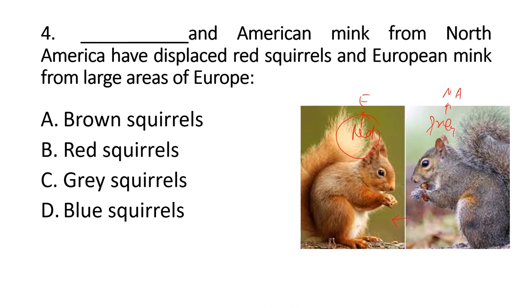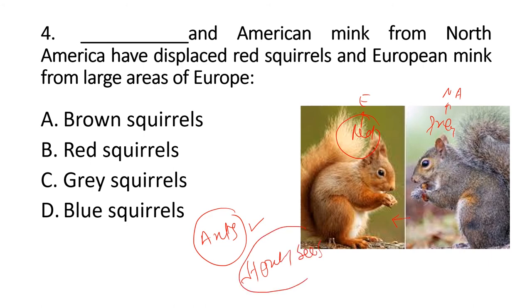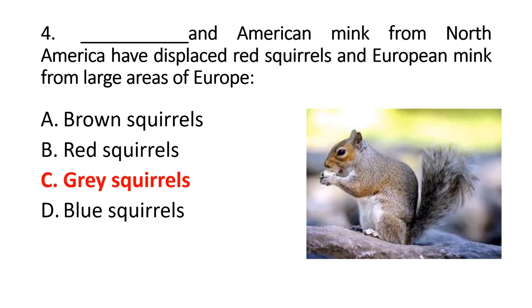We can see more examples — ants are being moved from one area to another and are considered exotic species. We can also use honeybees as an example. Honeybees are moved from one area to another and act as pollinators, but the problem is that their morphology and behavior is different from local pollinators that have evolved locally. The right answer is Charlie — grey squirrels.